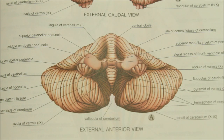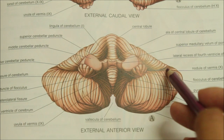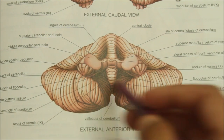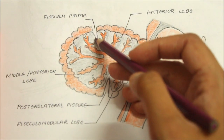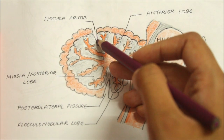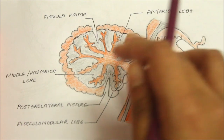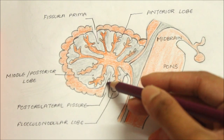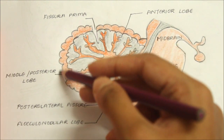Now after looking at the external features, we will look at the parts of the cerebellum. The cerebellum is divided into numerous small parts by fissures. The horizontal fissure separates the superior surface from the inferior surface. The fissura prima, or primary fissure, separates the anterior lobe from the middle lobe on the superior surface. The posterolateral fissure separates the middle lobe from the flocculonodular lobe on the inferior surface.